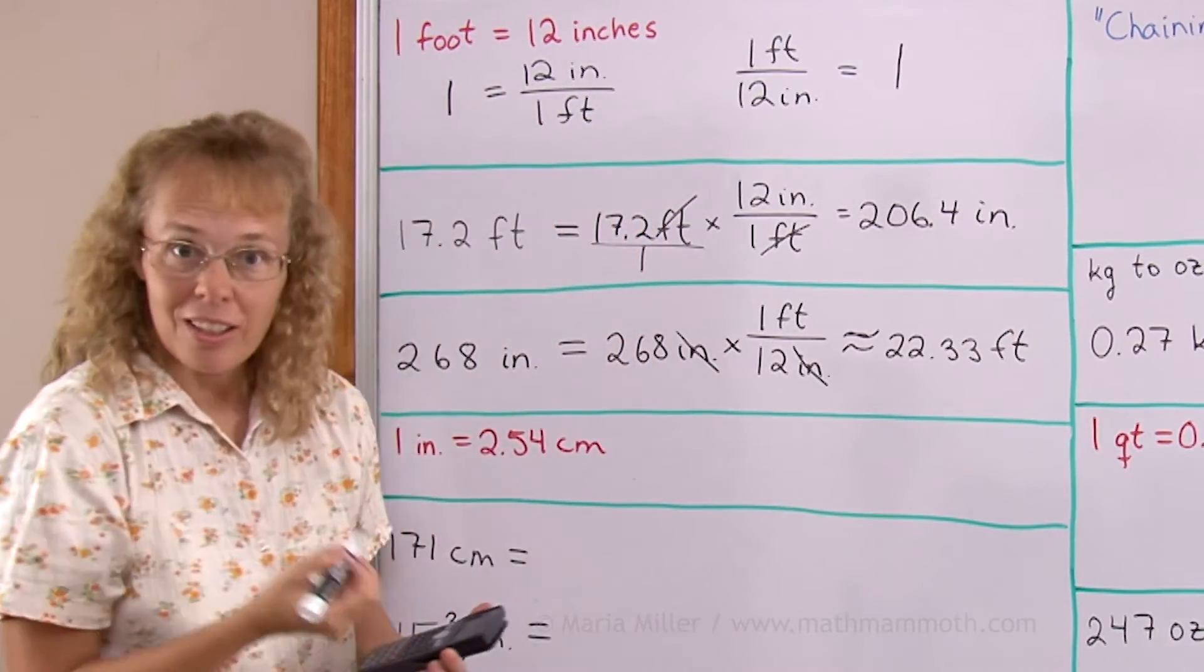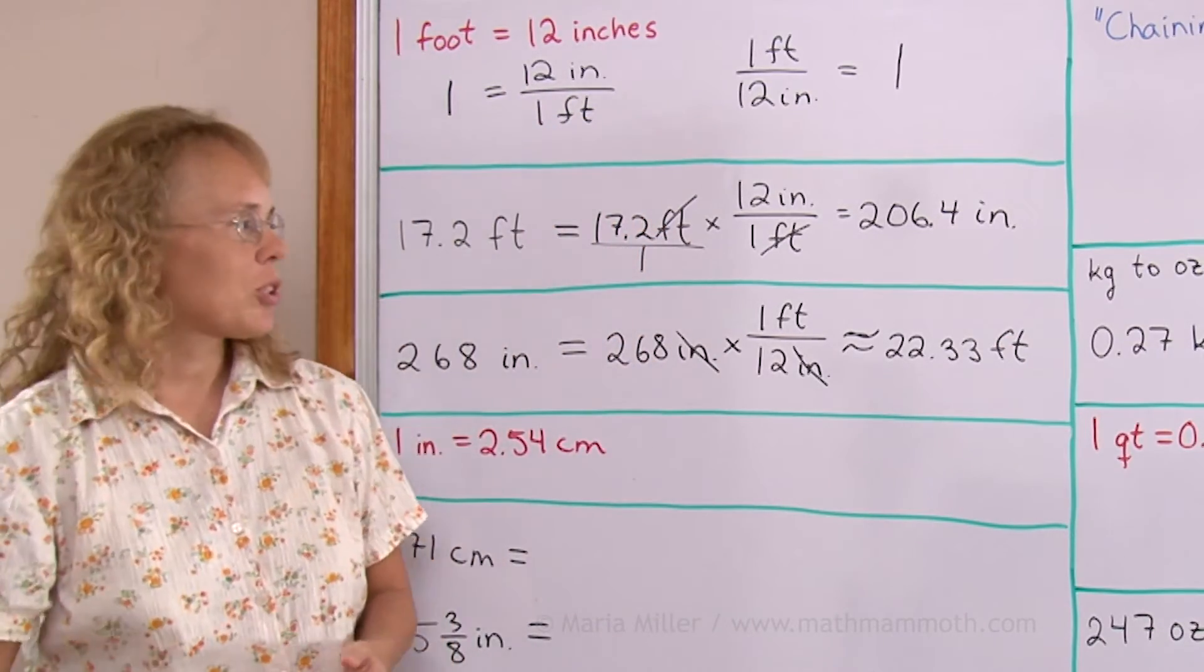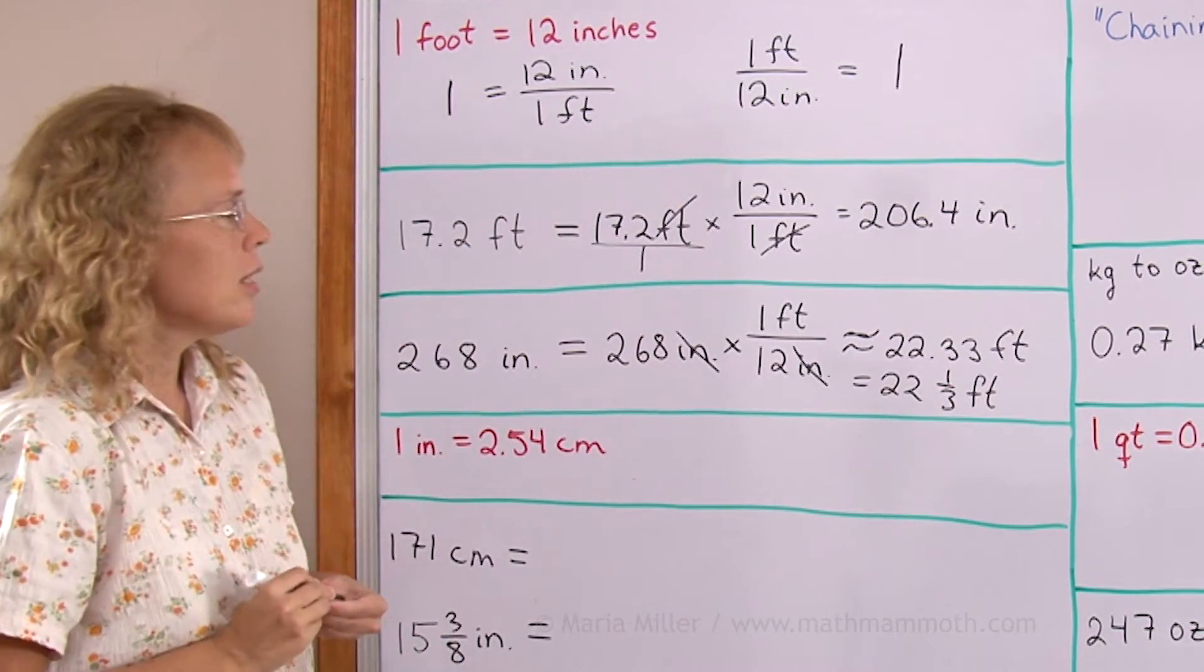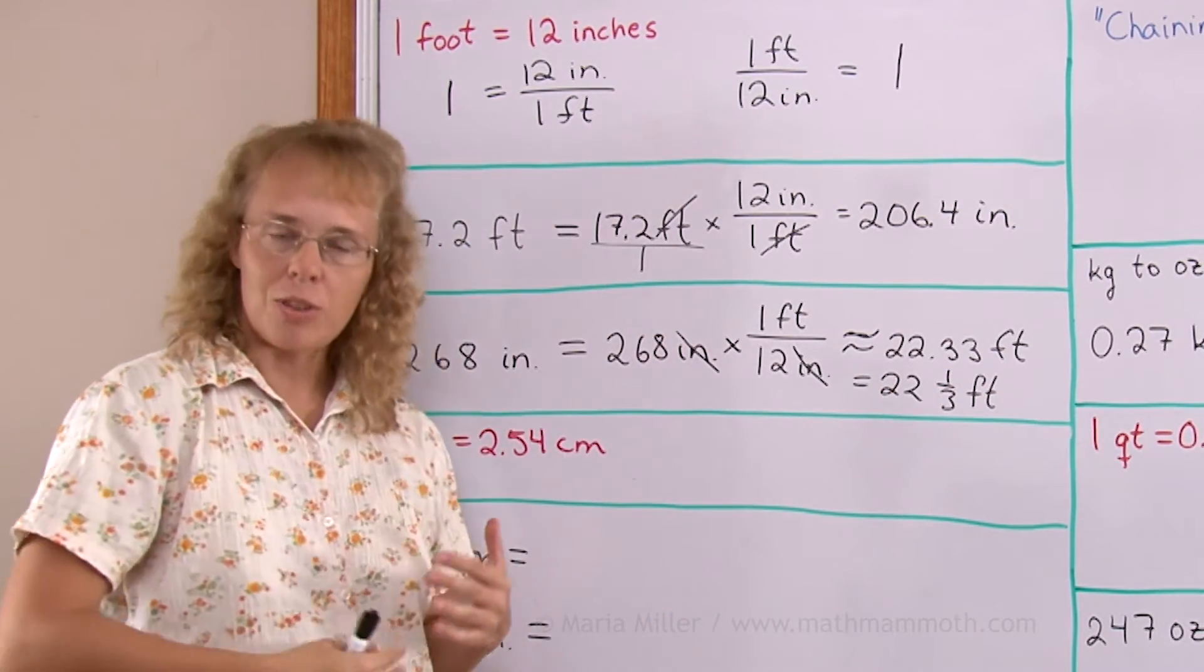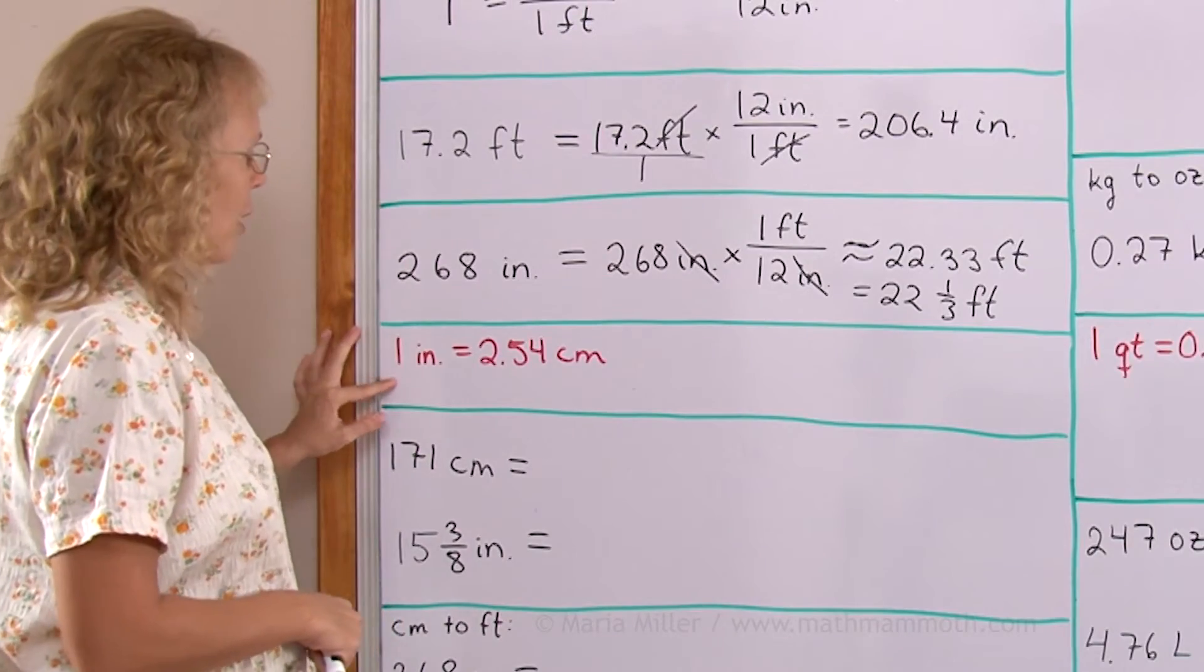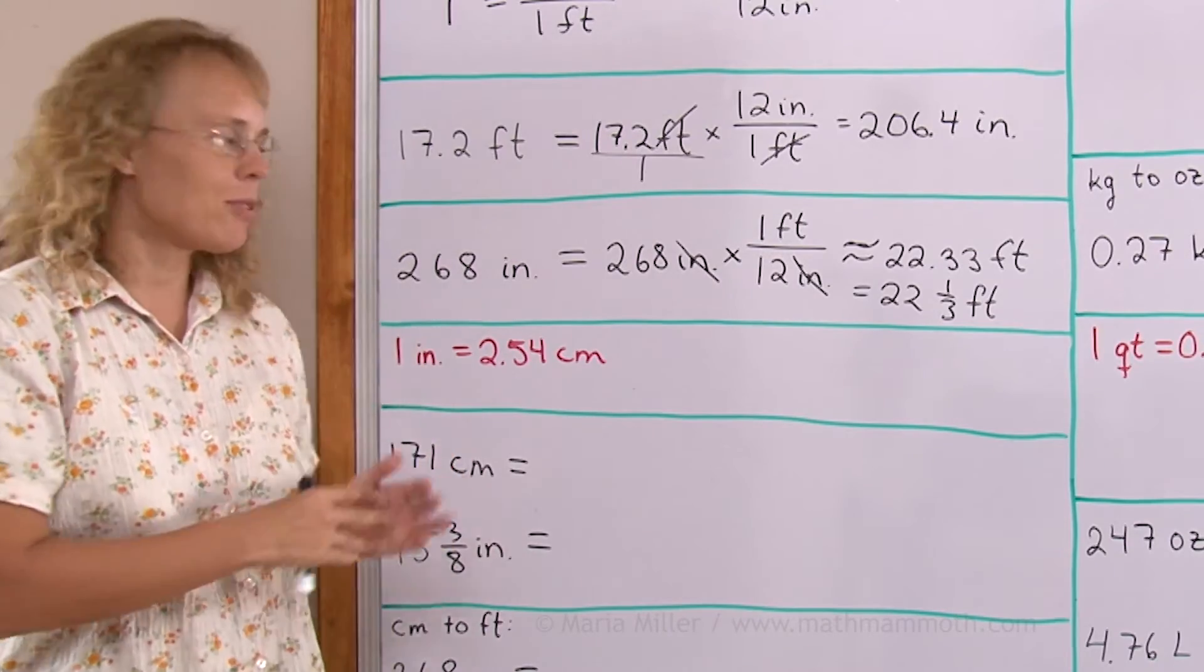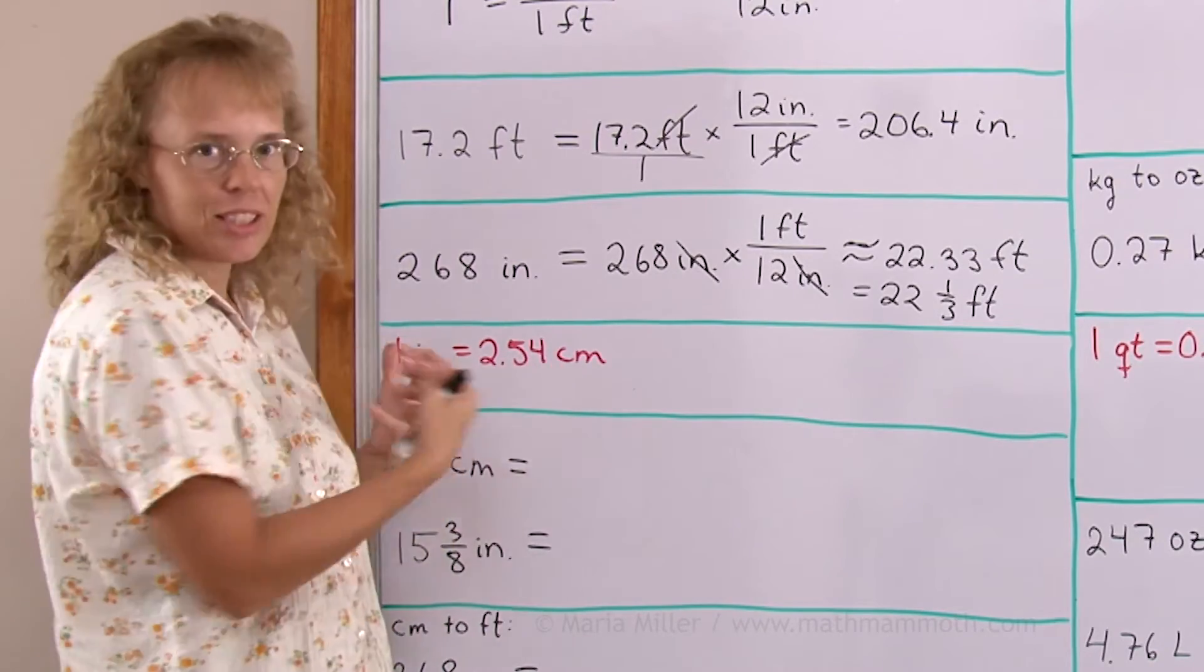You could say 22 feet and 4 inches. Let's go on to another example. 1 inch equals 2.54 centimeters. This is now converting between the customary and metric units.